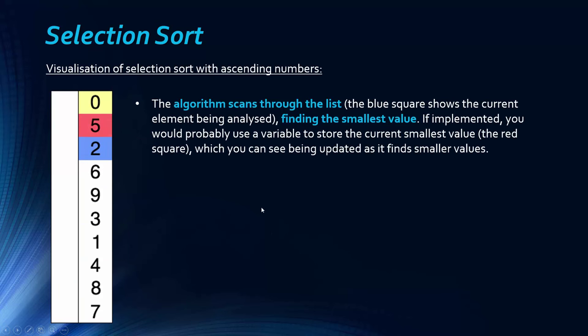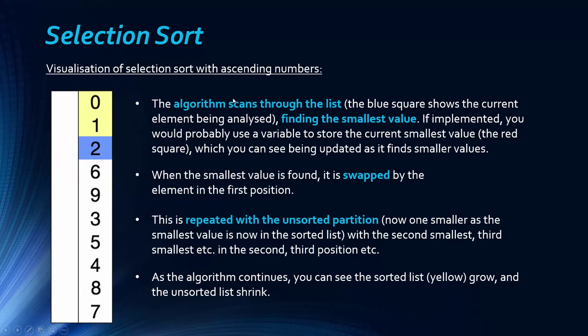I've just found these on the internet. And so what is happening here, the algorithm is scanning through the list. The blue square is the one that's currently checking, and it's finding the smallest value. So it's going through until it finds the smallest value. The red square is kind of the current smallest value. You can see it's being updated as it goes along. So you can see it's kind of staying there until a smaller value is found. And when it's found, it's swapped by the element in the first position, and then the second position and the third position, based on how small they are. And you can really see how the sorted list, the yellow list, starts to grow, and the white list, the unsorted list, shrinks, which is the selection happening. But really, you're just swapping the positions of the elements. You can just see it going along, and then swapping. It's going to swap six with five, and then it's going to continue like that.